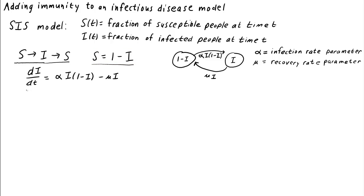We could then write down our model using a single differential equation: di dt equals alpha times i times 1 minus i minus mu times i, where the first term represented how the number of infected individuals would increase when a susceptible individual would become infected, and the second term would represent how the number of infected individuals would decrease when an infected individual would recover and become susceptible again.